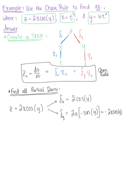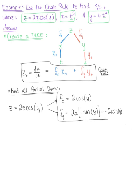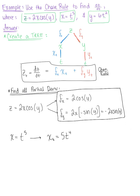So there are our two first-order partials with respect to x and y. Now we want to find the derivative of x and y with respect to t. We have x defined as t to the fifth, so the derivative of x with respect to t is 5t to the fourth. And then with y equal to 6t squared, the derivative of y with respect to t is 12t.